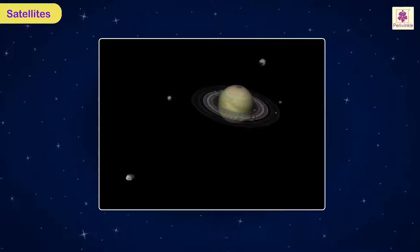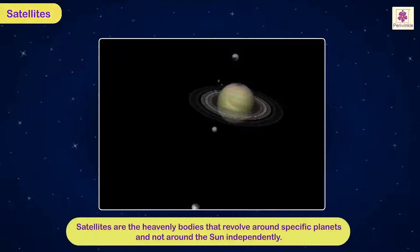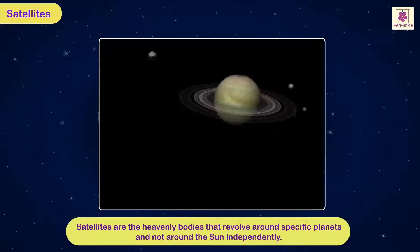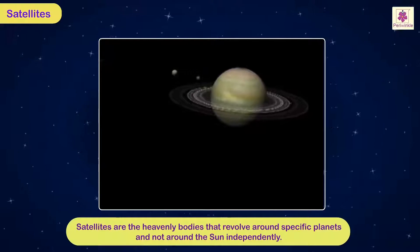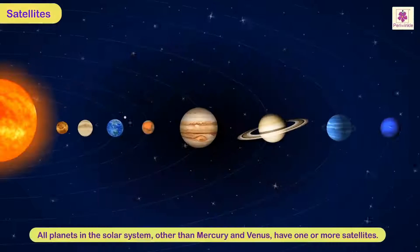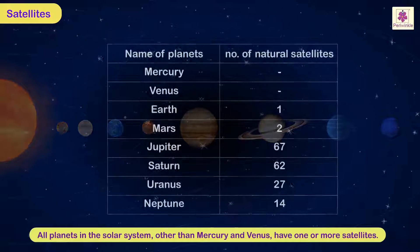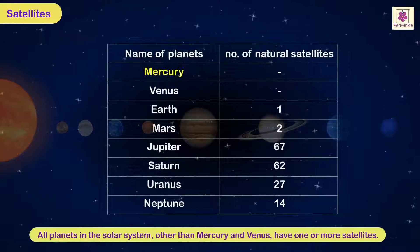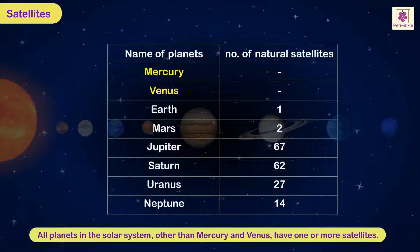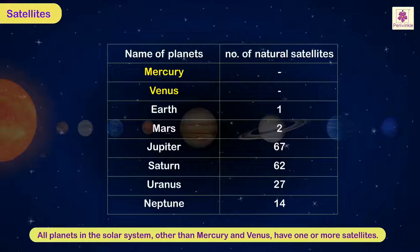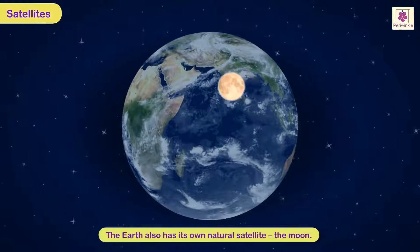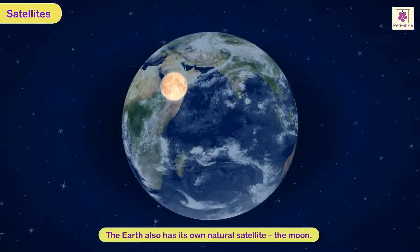Satellites are the heavenly bodies that revolve around specific planets and not around the Sun independently. All the planets in the solar system other than Mercury and Venus have one or more satellites revolving around them. The Earth also has its own natural satellite, the Moon.